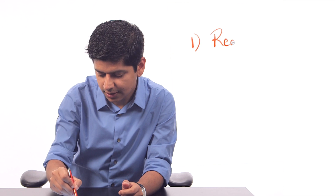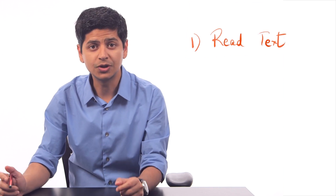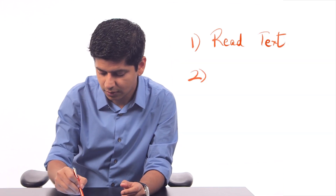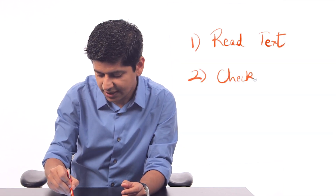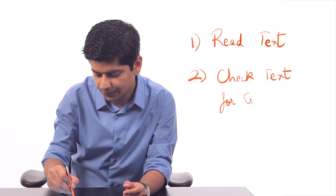In my mind there are two main steps in making this work. In the first step we have to read text from a document — let me write that down: Read text. And in the second step, what we have to do is check this text for curse words — let me write that down also: Check text for curse words.